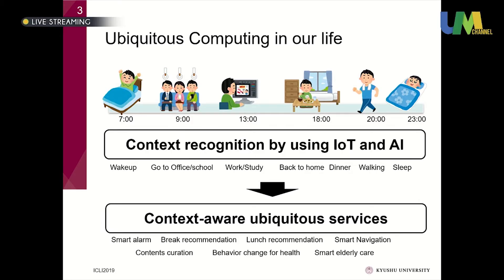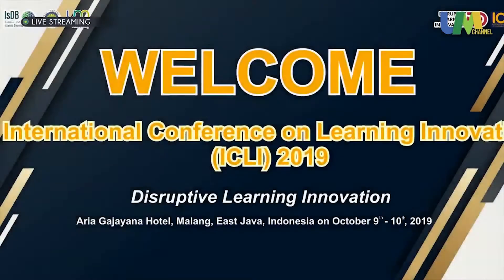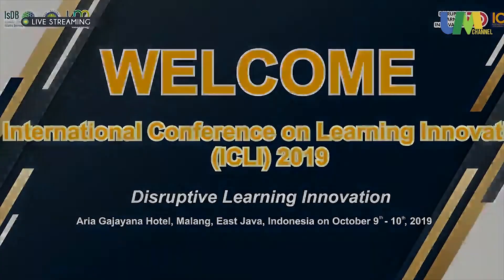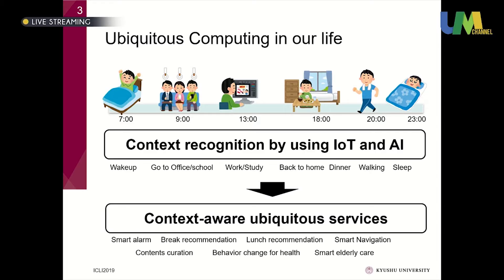For example, simple applications include a smart alarm system. Students have also made applications to recommend breaks, lunch recommendation systems, smart navigation systems, and behavior change support systems for improving health. We develop such systems based on these technologies. That is ubiquitous computing.